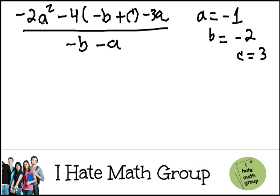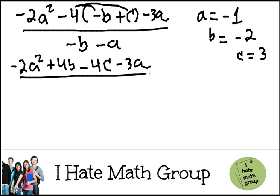Well first I'm going to use PEMDAS, which is parenthesis, so I'm going to go ahead and do this piece. So negative 2a squared, negative 4 times negative b is going to be plus 4b, negative 4 times c is negative 4c minus 3a all over negative b minus a.